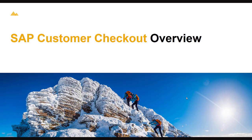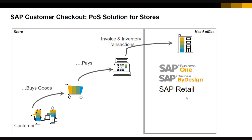SAP Customer Checkout supports the checkout process in a physical store. A customer walks into a physical store, buys goods, then goes to the POS terminal where the cashier is, pays for the goods, and leaves the store. The transaction created in the POS terminal is then posted to the according SAP ERP system. We support integration to SAP Business One, SAP Business by Design, and SAP Retail.